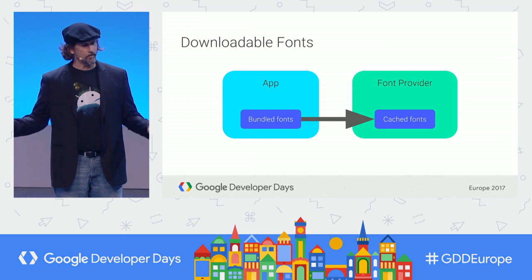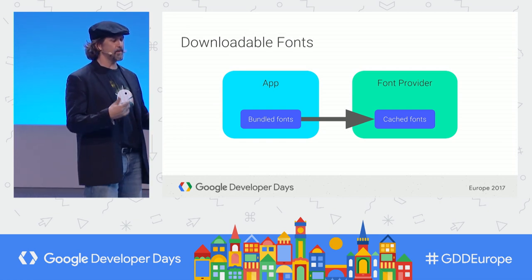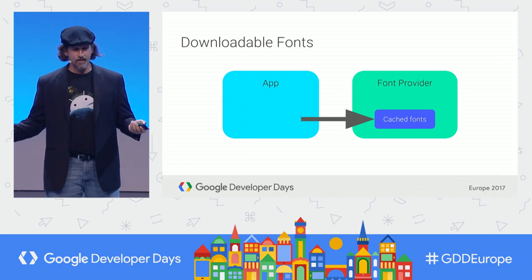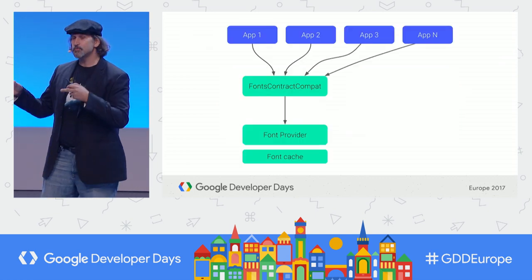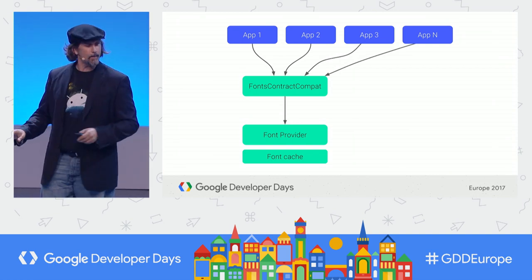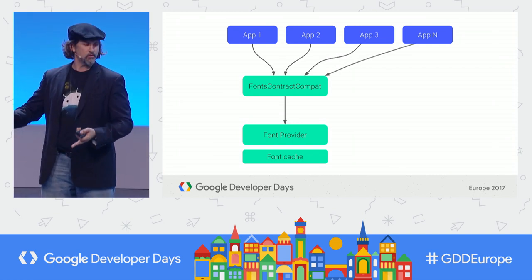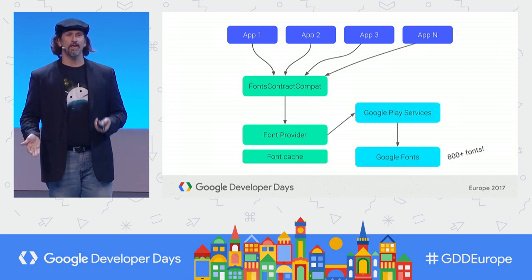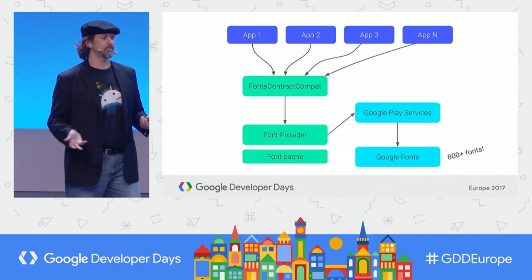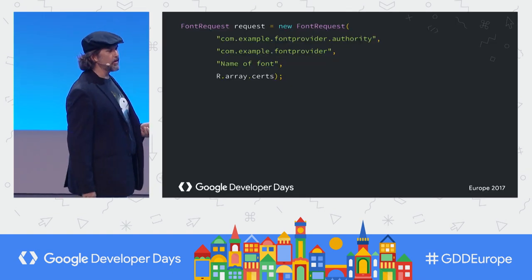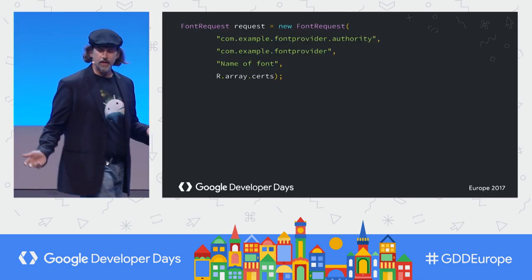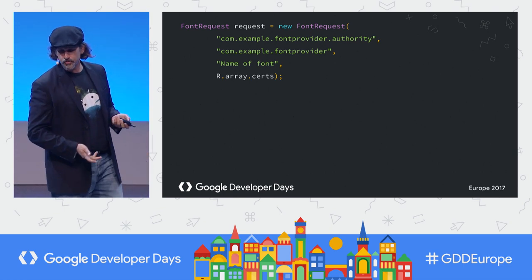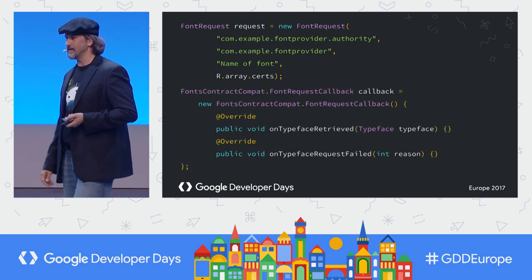So we added downloadable fonts. The font provider fetches and serves fonts to your app, so most importantly you don't have to bundle them anymore. This font provider is actually shared between apps, giving you memory, network, and space savings. With Google Play Services and Google Fonts, you get over 800 fonts. In code, you can request these fonts using a font request, which contains things like authority, package, and certs for security, and callbacks for success or failure.